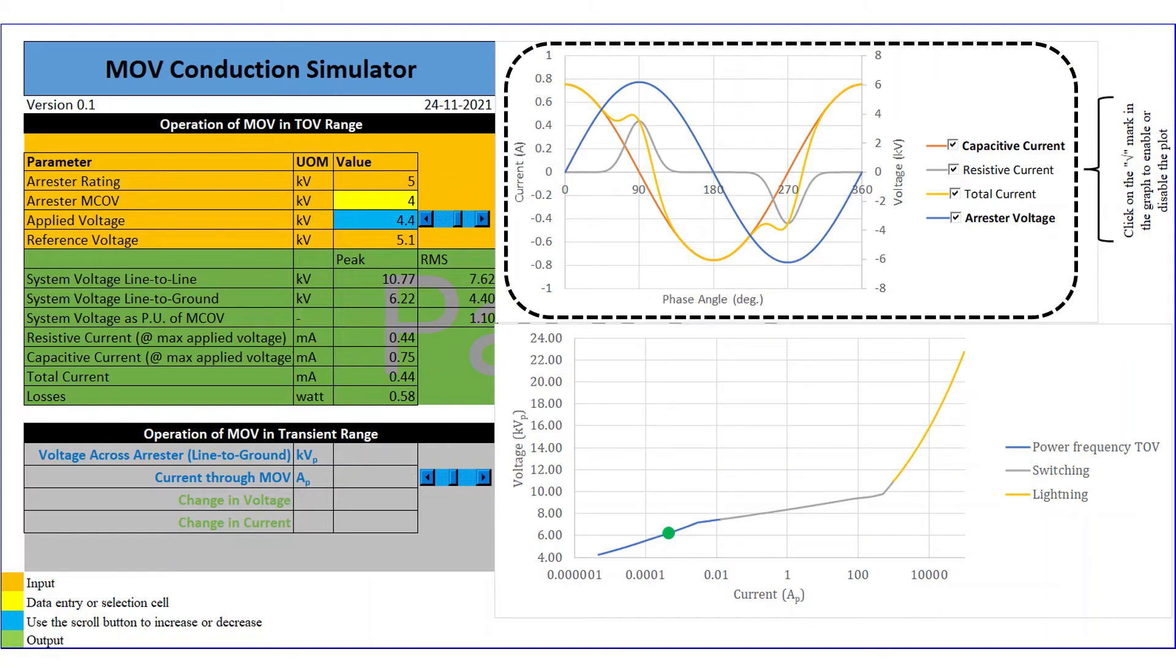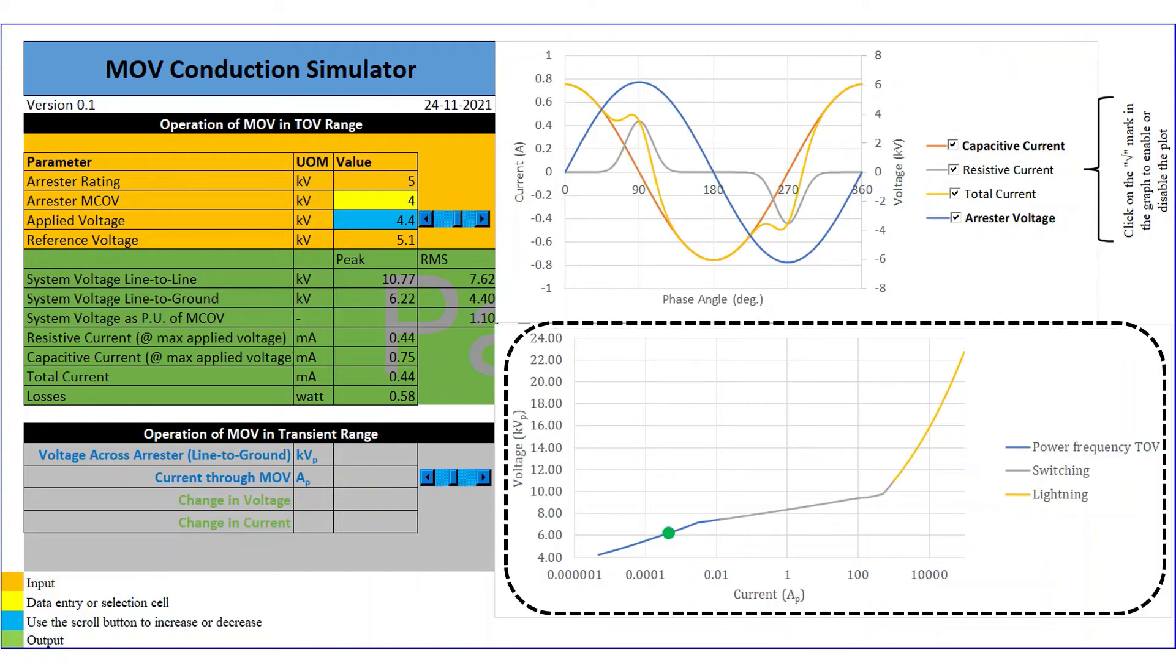The graph shown in the right hand side top has the voltage and current signal in the sinusoidal waveform. This graph shown in the right hand side bottom has the voltage and current curve plotted in a logarithmic scale. This graph has been shown in three zones, ToV range, switching transient and lightning transient range.